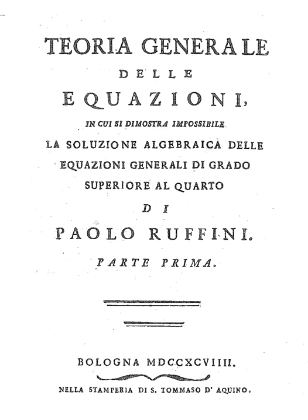The theorem was first nearly proved by Paolo Ruffini in 1799. He sent his proof to several mathematicians to get it acknowledged, amongst them Lagrange and Augustin-Louis Cauchy, who sent him a letter saying: 'Your memoir on the general solution of equations is a work which I have always believed should be kept in mind by mathematicians and which, in my opinion, proves conclusively the algebraic unsolvability of general equations of higher than fourth degree.' However, in general, Ruffini's proof was not considered convincing.